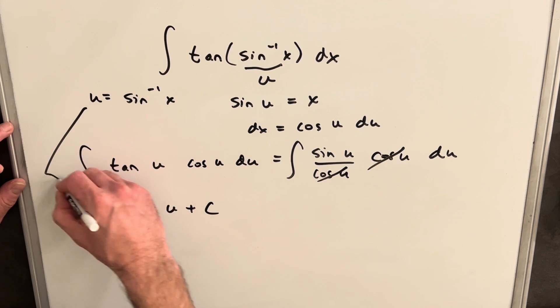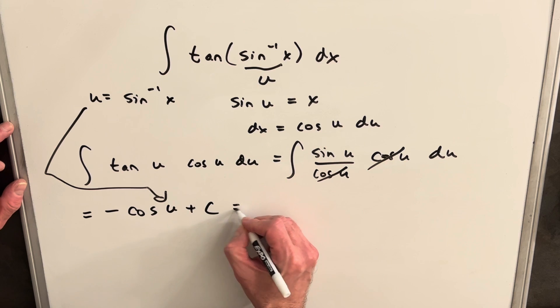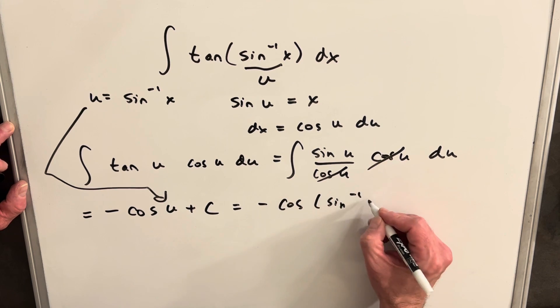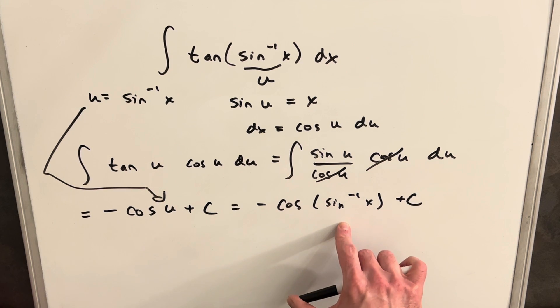So at this point, we could back substitute and we're going to be left with -cos(sin^(-1)(x)) + c. So this is a perfectly correct answer.